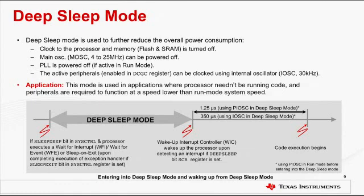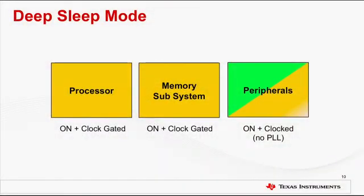In addition, a wake-up interrupt controller can also wake up the processor from deep sleep upon detecting an interrupt if the deep sleep bit in the SCR register is set. When the exit event occurs, hardware brings the system clock back to the clock source and frequency it had at the onset of deep sleep mode before enabling the clocks that were disabled. In the diagram, blocks shown in orange indicate the processor and memory are powered on but clock-gated. Blocks in shaded green and orange indicate that the peripherals are powered on but can only be clocked from the internal oscillator.